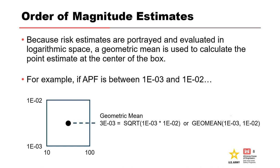Because risk estimates are portrayed and evaluated in logarithmic space, a geometric mean is used to calculate the point estimate at the center of the box. For example, given an APF with an order of magnitude estimate ranging from 1×10⁻³ to 1×10⁻², the geometric mean can be calculated by taking the square root of the product of the values that define the range, or by using the GeoMean function in Microsoft Excel. For this example, the geometric mean is 3×10⁻³, which equals the square root of 1×10⁻³ times 1×10⁻².